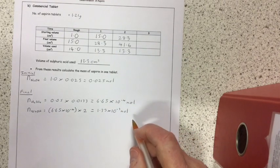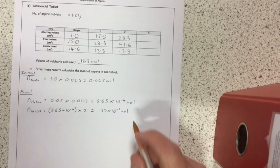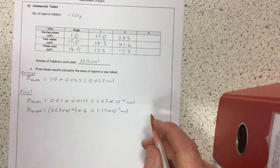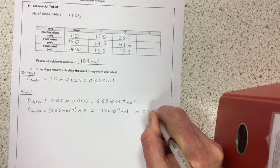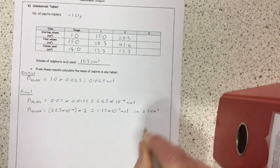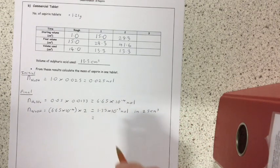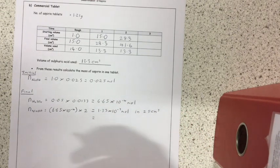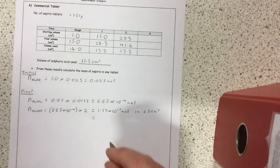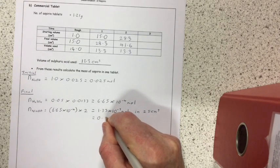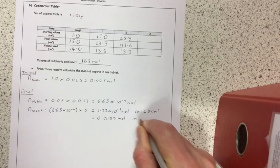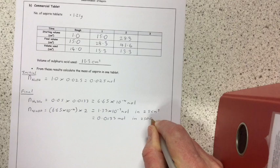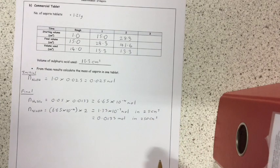Now, that is the number of moles of sodium hydroxide in the 25 ml we took out of the standard flask. So, the total number of moles of sodium hydroxide in the entire sample, all 250 ml, is 10 times that, or 0.0133 moles. That's in 250 cubic centimeters, which was the whole sample.